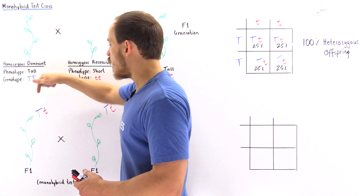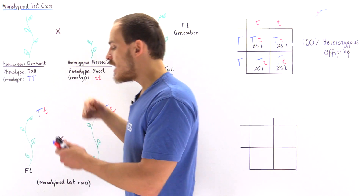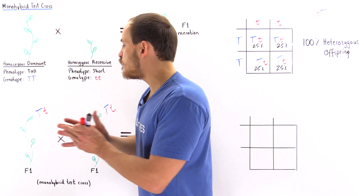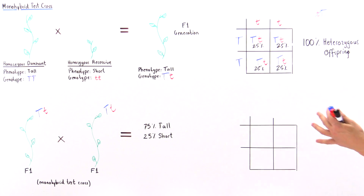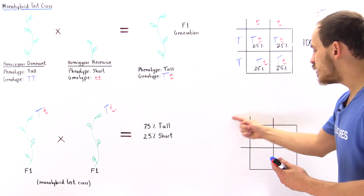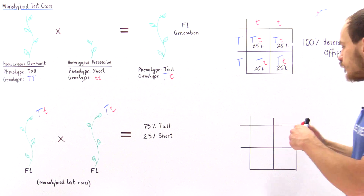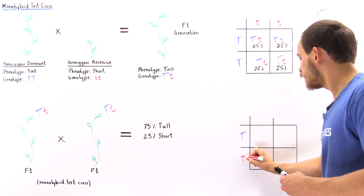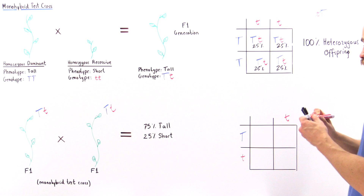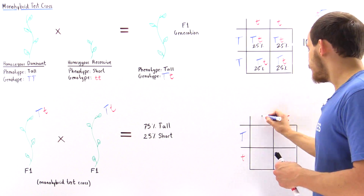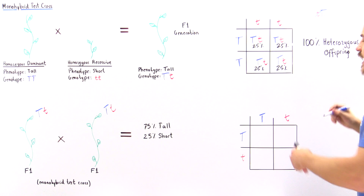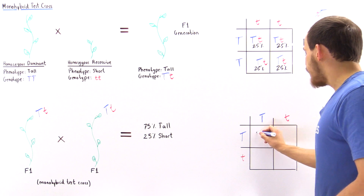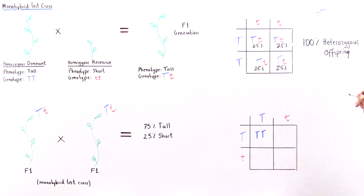Once again, one of the parents is uppercase T, lowercase t, and when we form the gametes, the law of segregation tells us that these two genes separate into individual gametes. So for parent number one we have uppercase T here and lowercase t here, and for parent number two we have lowercase t here and uppercase T here. Following the same procedure, when uppercase T crosses with uppercase T, we produce uppercase T, uppercase T.